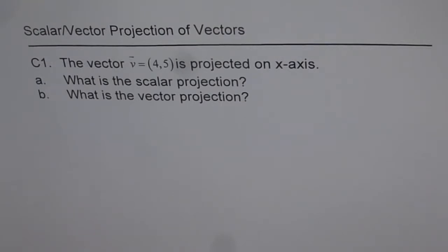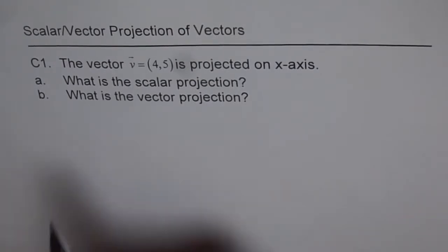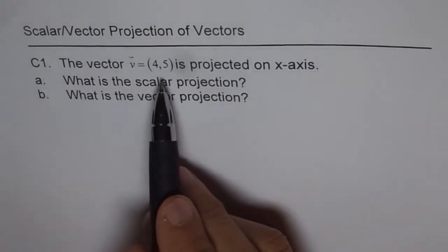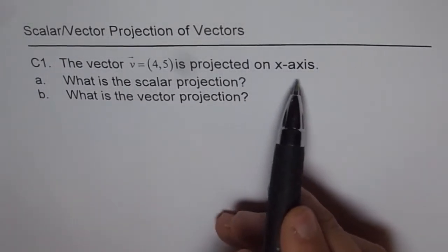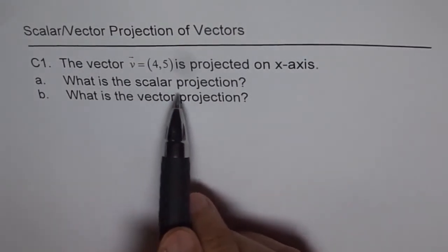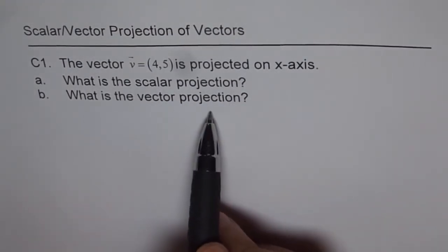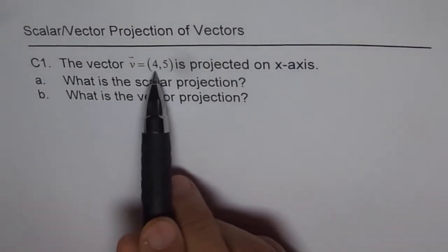Question number one is C1 which says the vector V(4,5) is projected on x-axis. What is the scalar projection and what is the vector projection? That means scalar projection of vector V on x-axis.